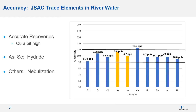To evaluate accuracy of the Hydromist methodology, we measured a trace elements in river water reference material from the Japan Society of Analytical Chemistry, looking at 10 certified analytes. Arsenic and selenium were the hydride-forming elements; the others were analyzed by conventional nebulization. For most analytes, recoveries were within ±10%, demonstrating good accuracy. The exception was copper, which recovered slightly high — further investigation is needed — but overall the initial results look very promising.